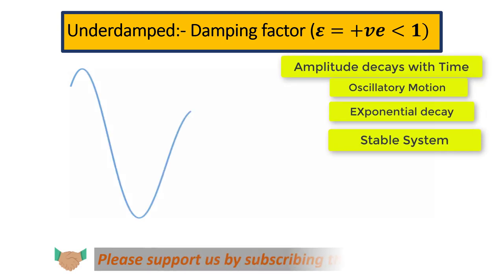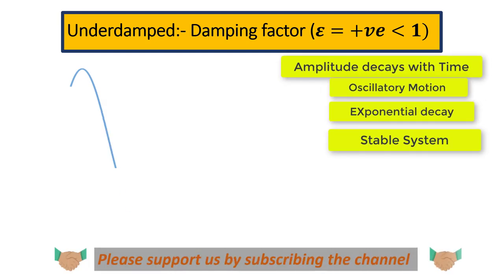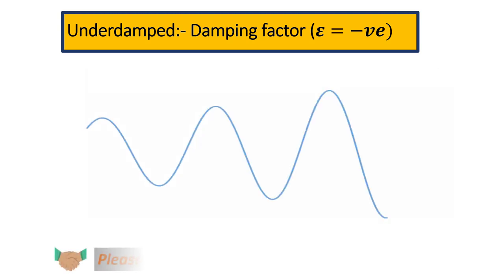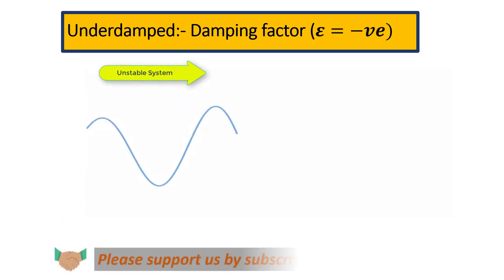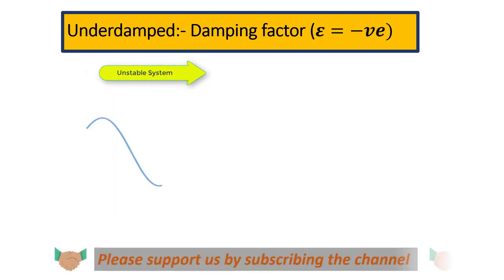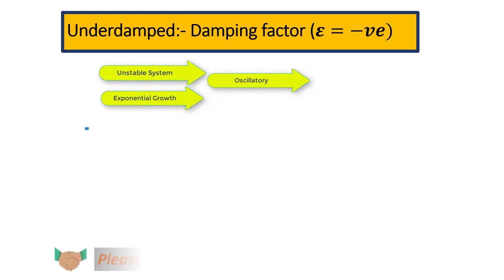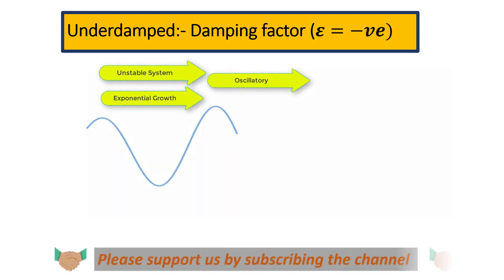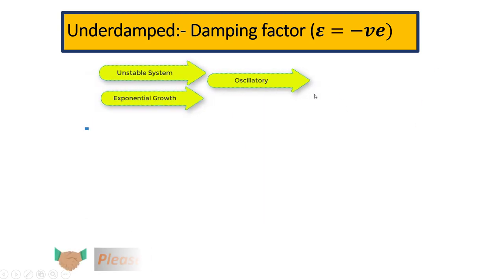If the damping factor is smaller than zero — a negative value — looking at this plot, the amplitude is not decaying with time; it is growing with time. This system is unstable because it will never achieve its initial equilibrium position. The growth is also exponential in nature, the motion is oscillatory and periodic, and the amplitude is continuously increasing with time.